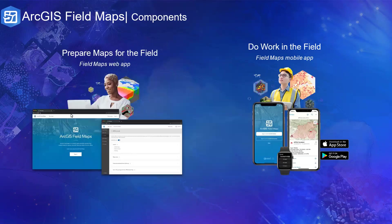There are two key components when working with ArcGIS Field Maps: the Field Maps web application and the Field Maps mobile application. The web application is for preparing your maps for the field — changing pop-ups, symbology, or layers. The mobile application is where you do actual data collection. You can download it from the Play Store or App Store, sign in to access content within your organization or groups, and carry out your field activities as a mobile worker.